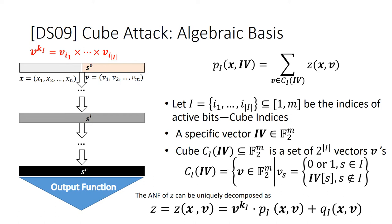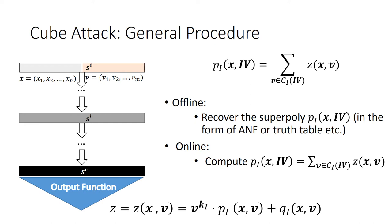In cube attack, a cube index set I is predefined. Such I uniquely determines an IV monomial v to the Ki. The output bit is uniquely decomposed as z equals v to the Ki times Pi plus Qi, where Pi is called the superpoly. For such set I and a binary vector IV, a specific structure named cube is defined as Ci containing 2 to the I vector Vs. Dinur and Shamir have proved that the value of the superpoly can be computed by summing the output z's corresponding to all the vector Vs in the cube. If the superpoly is secret key related with simple ANF, we can recover the ANF offline and get the exact value Pi online with a cube summation. In this way, one bit of key related information is recovered directly.